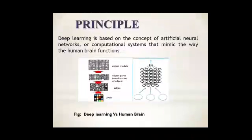Principle. The principle of Deep Learning is based on Artificial Neural Networks or computational systems that mimic the way of the human brain. Let us see in this picture Deep Learning versus Human Brain.